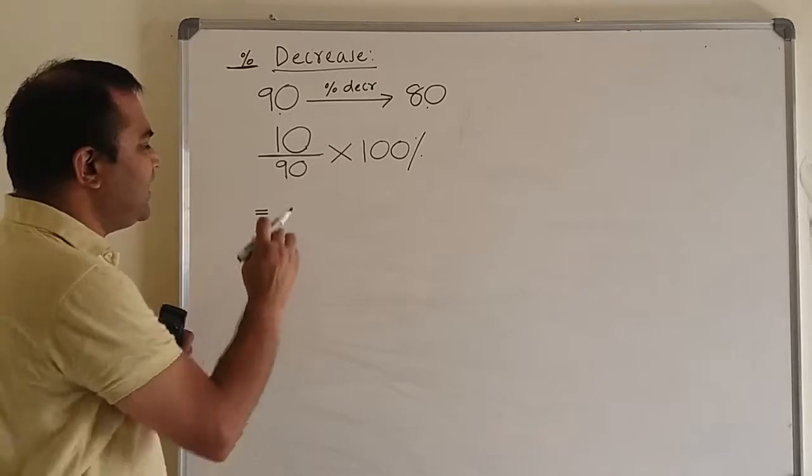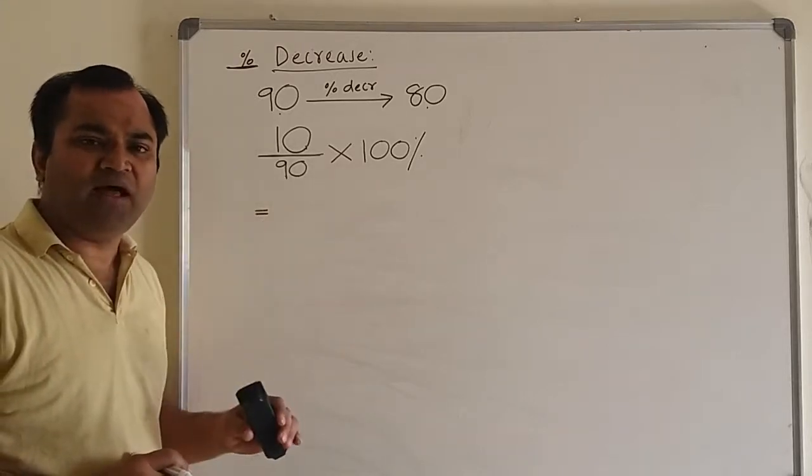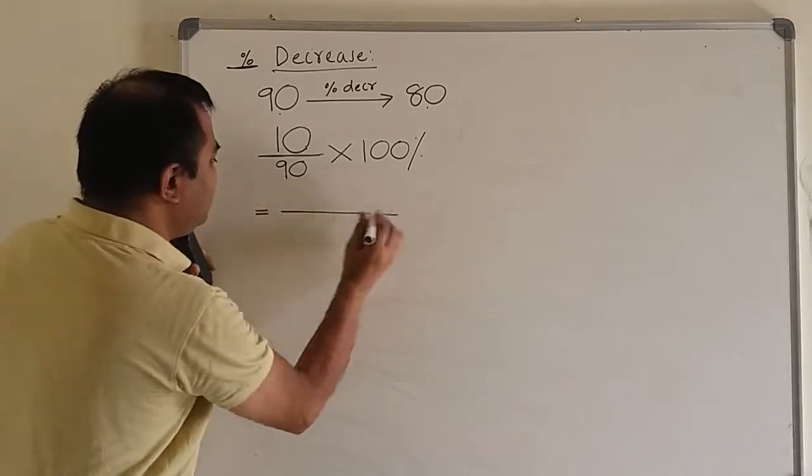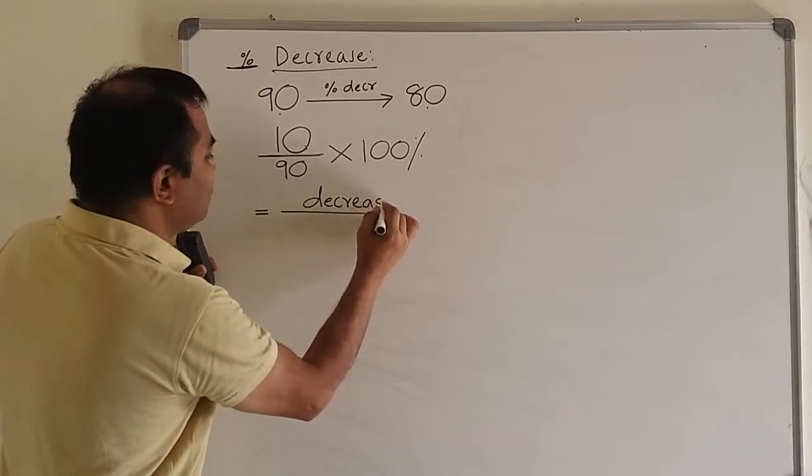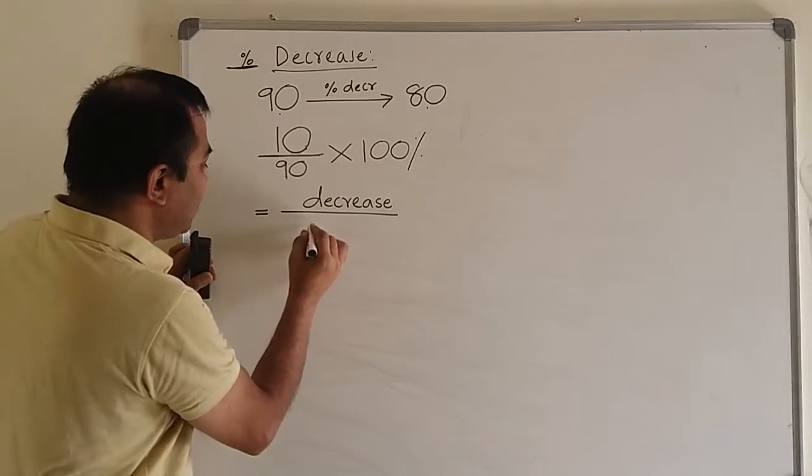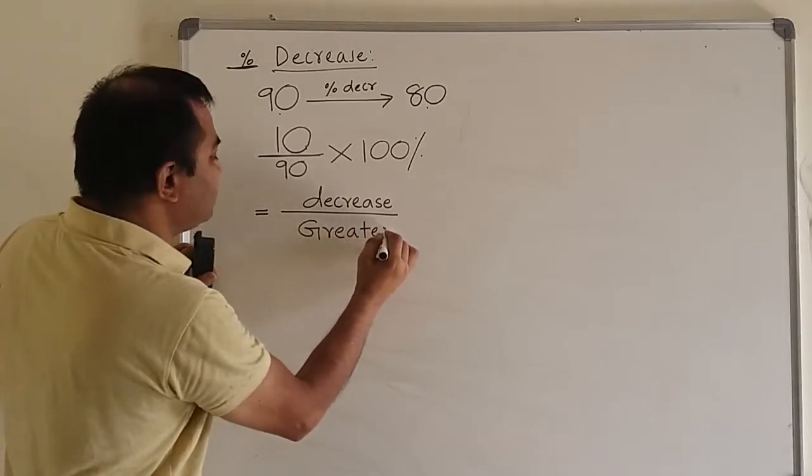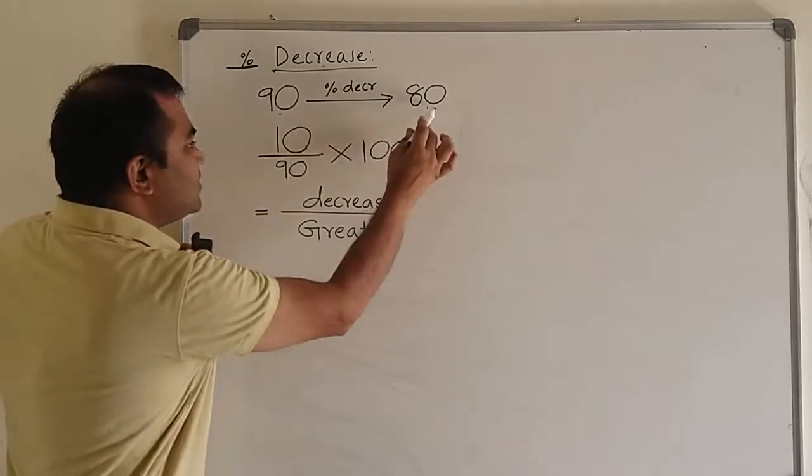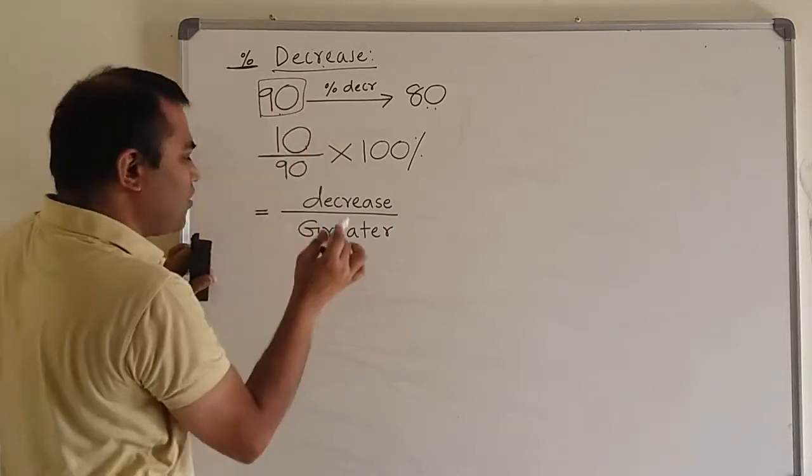Now, once again, as we did in percent increase, here also try to convert this into a formula which will work for any other case. 10 can be described as the amount of decrease from 90 to 80. 90 can be called as the greater of the two, since you have a decrease.